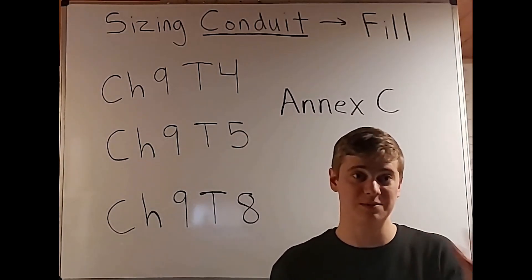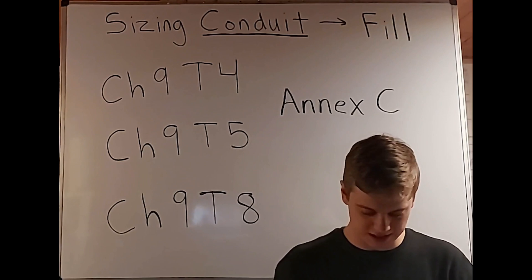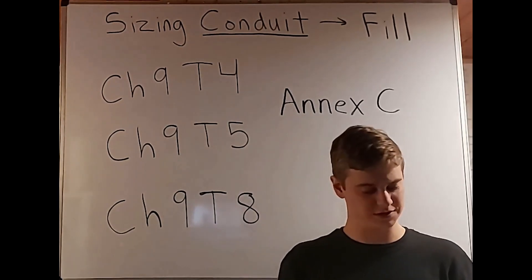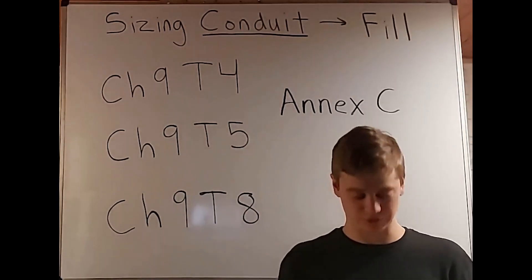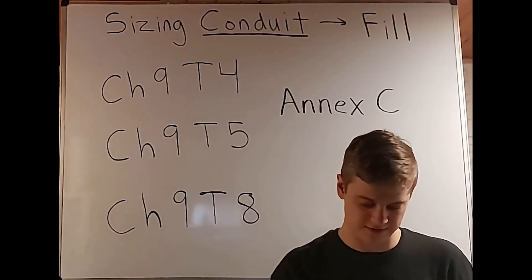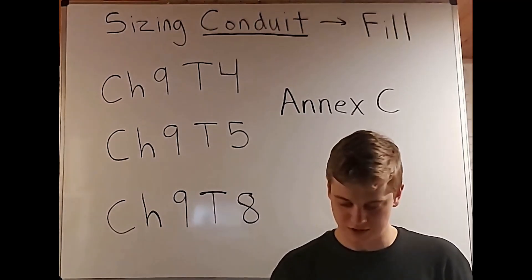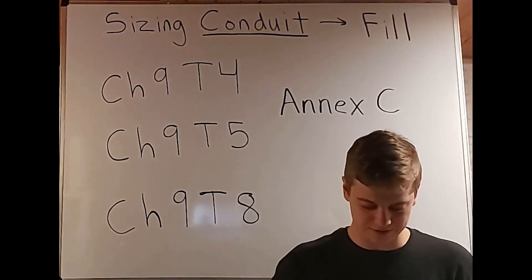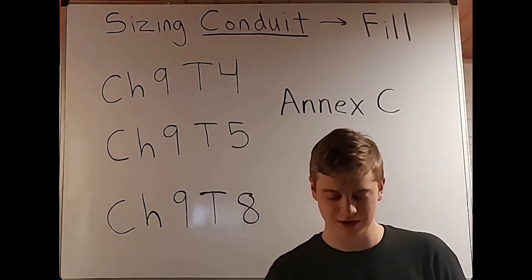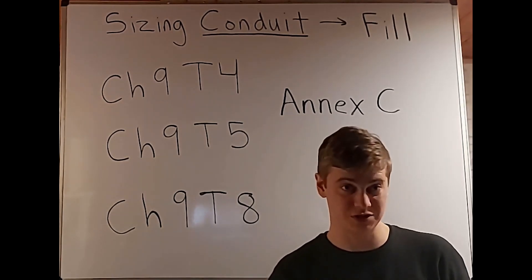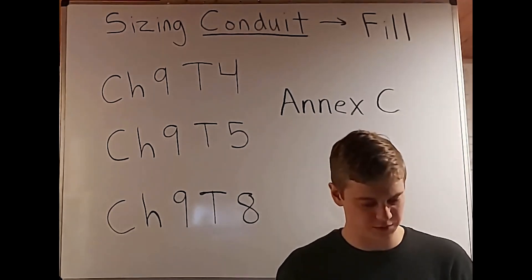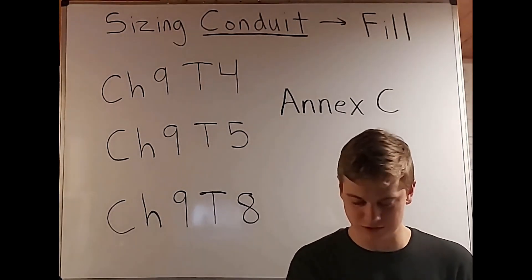So now we know how to size certain types of wire using Table 5. For example, if you have three THHN and four THWN-2 conductors, you go to Chapter 9, Table 5 and look up your size in AWG or KCmil — whether that's 14 gauge, 2/0, or 500 KCmil. On the right-hand side, you'll see millimeters squared, but more commonly you'll use square inches, listed under the 'approximate area' column.